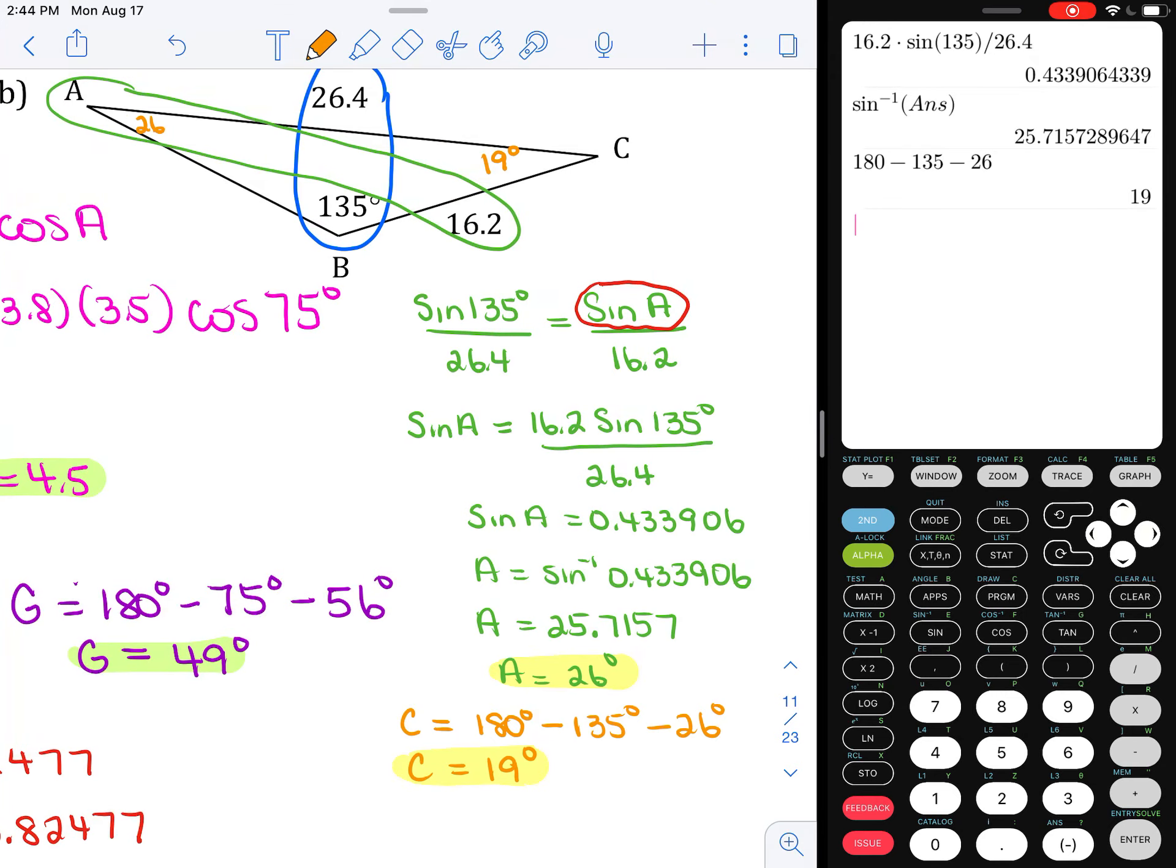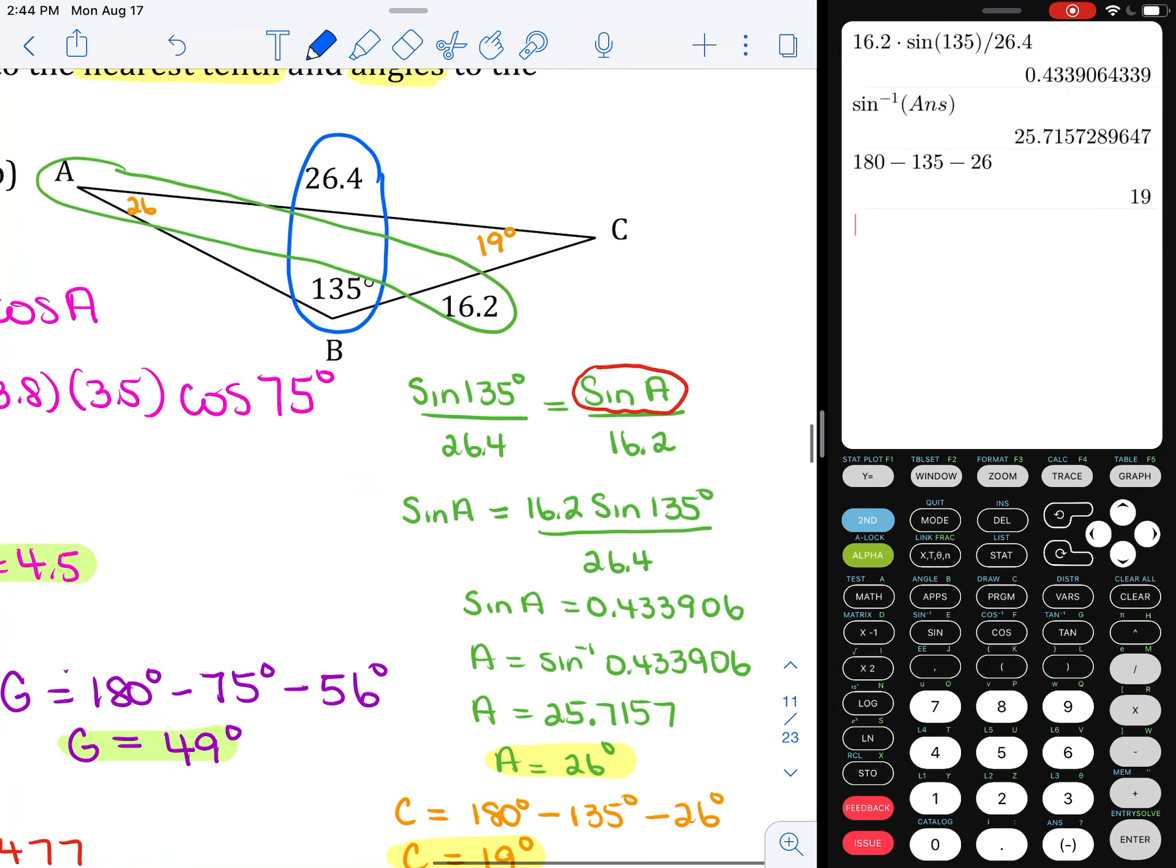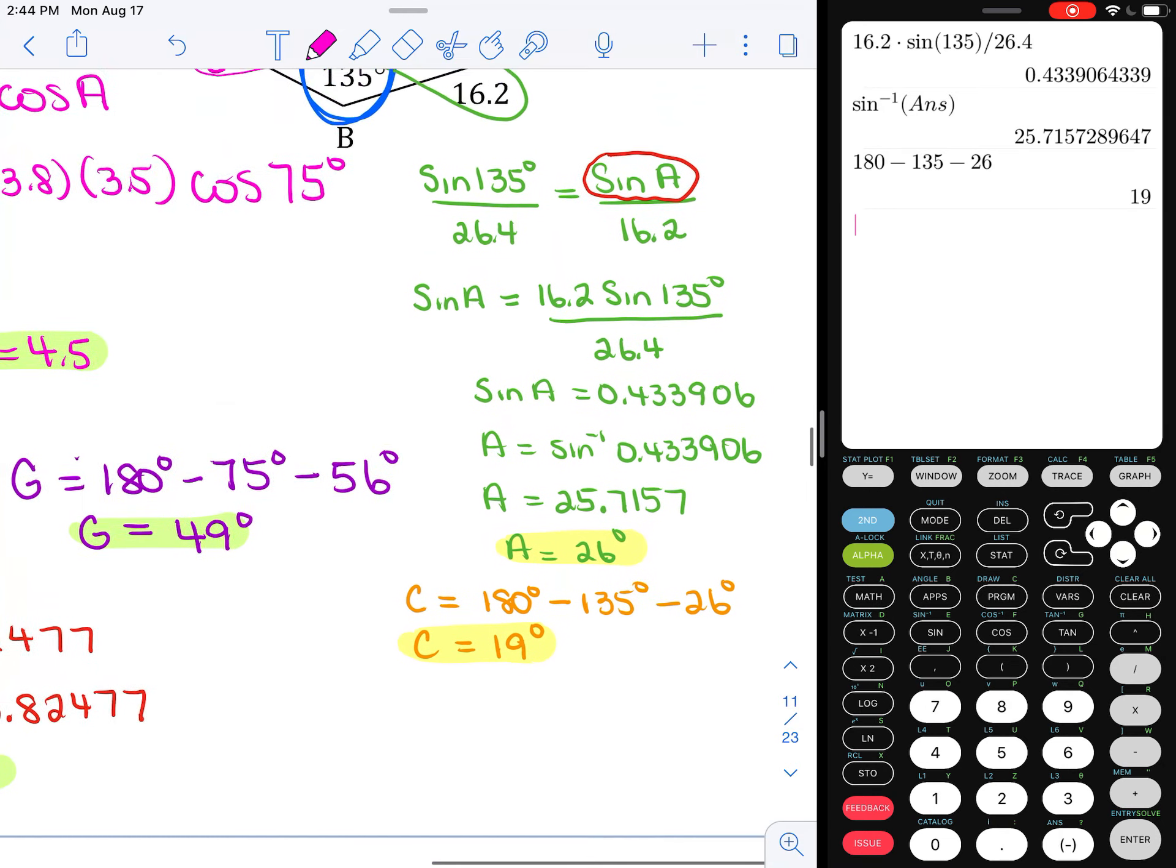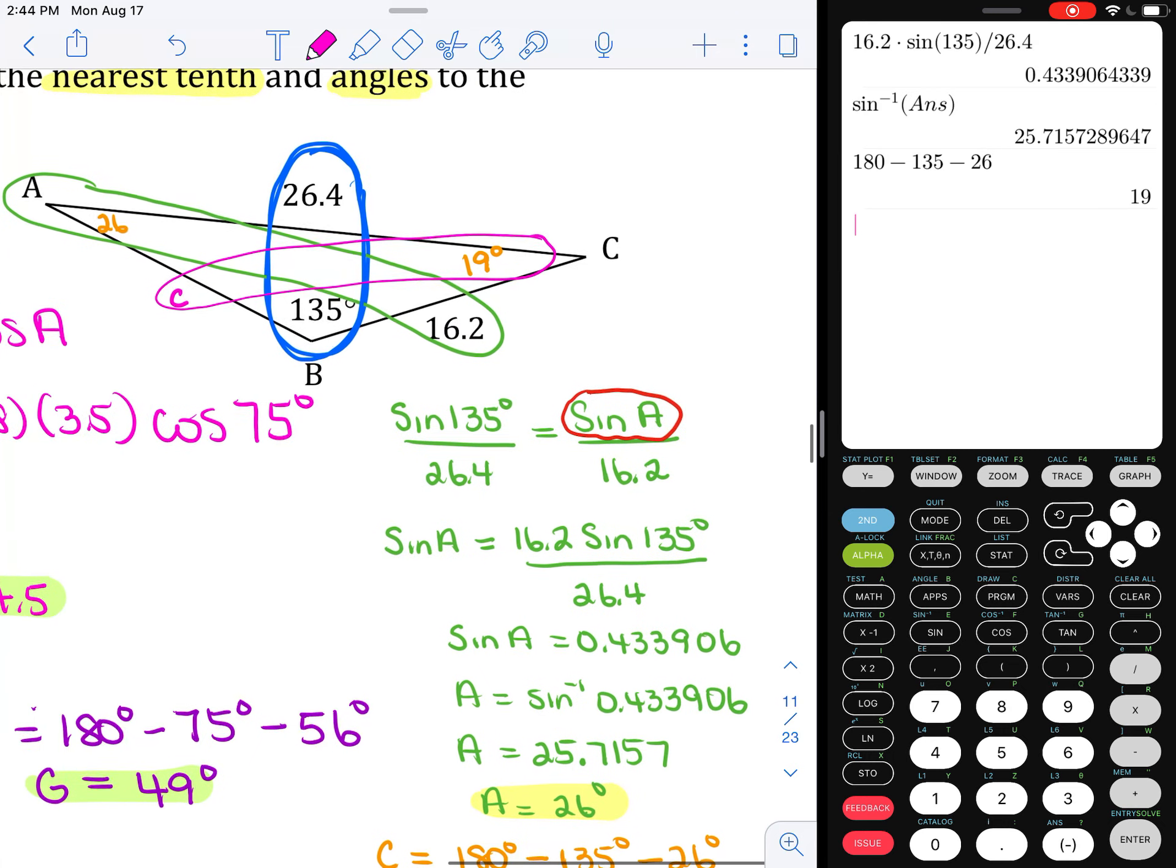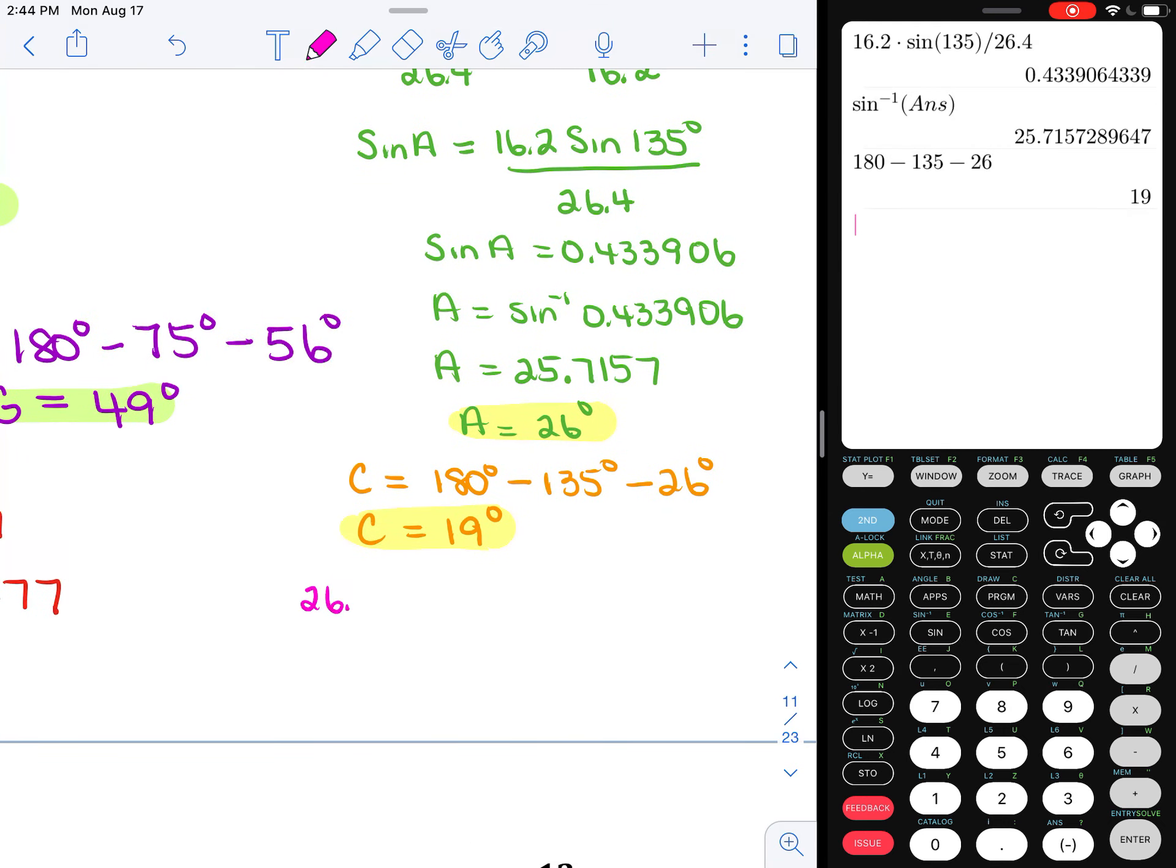Now, how are we going to find little c? Well, we still have this blue opposite angle, opposite side combination. So now, knowing that C was 19, I can use 19 and the opposite side of little c. I'll use my sine law again to find little c. I'm finding a side, so sides will go on the top using that blue opposite angle side combination. The side is 26.4 over the sine of opposite angle, which was 135, equaling what I want to find, which is c, over the sine of angle C, which we got to be 19.